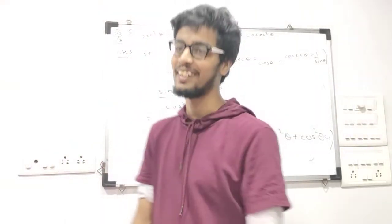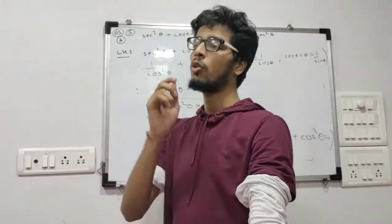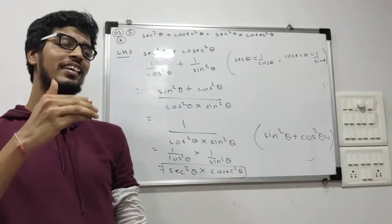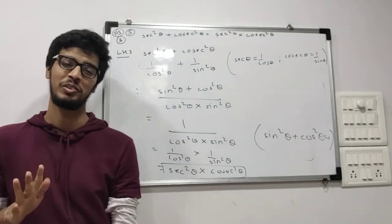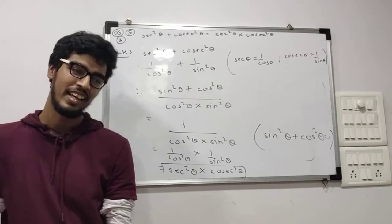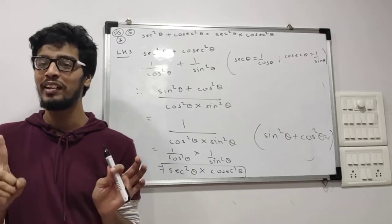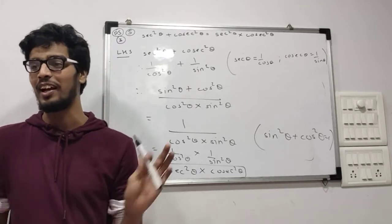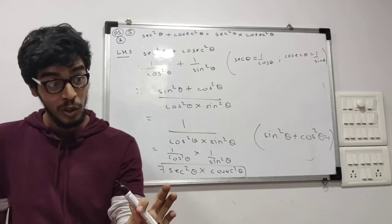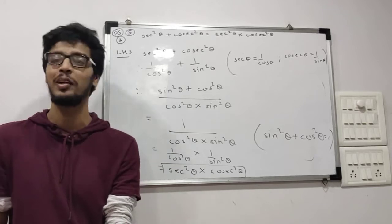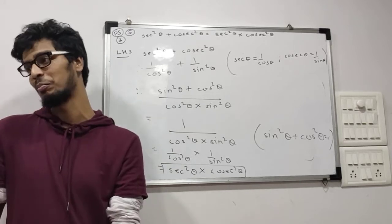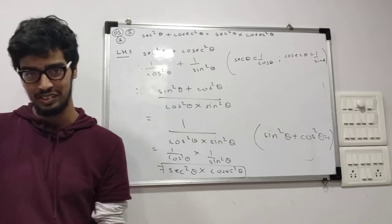That's the way you do it. So the rule is: always convert into the simplest ratio — that is, in terms of sin and cos. If you are successful in doing that, life becomes very much simpler. If you are not, then you will land in trouble. So questions are very simple — just convert into simple forms.